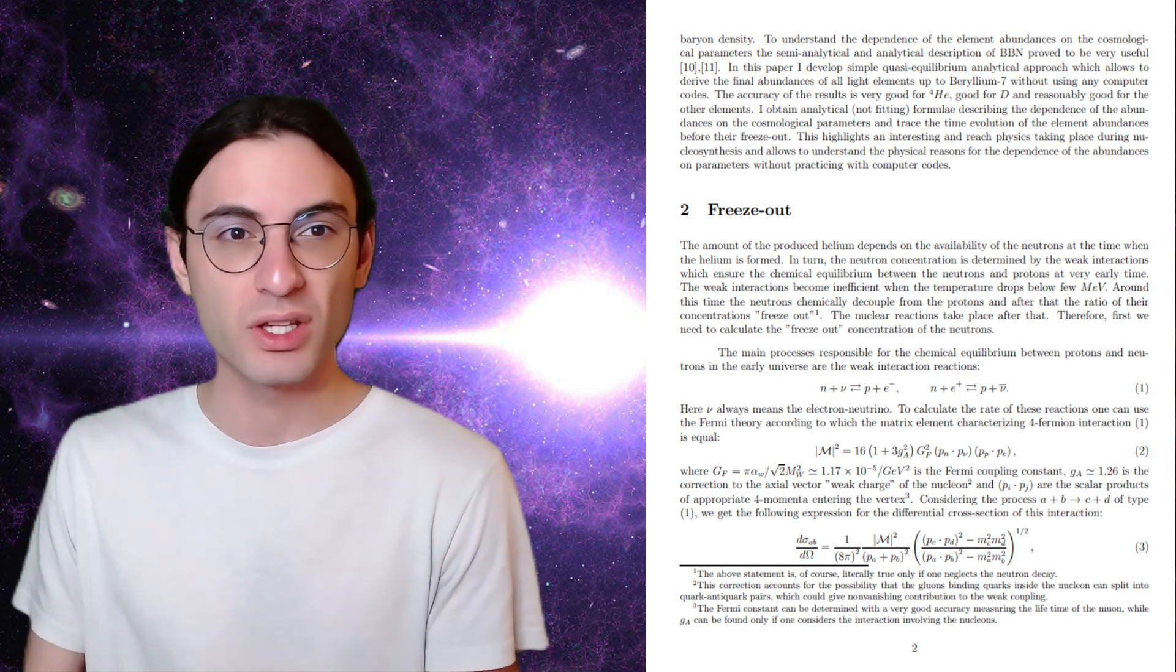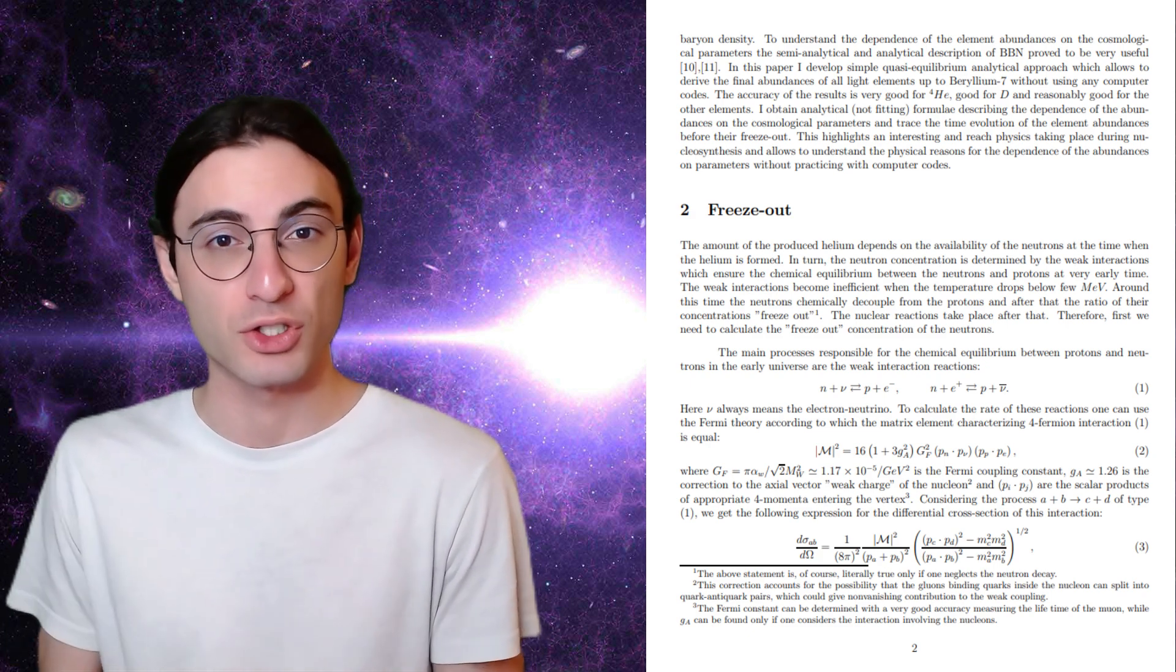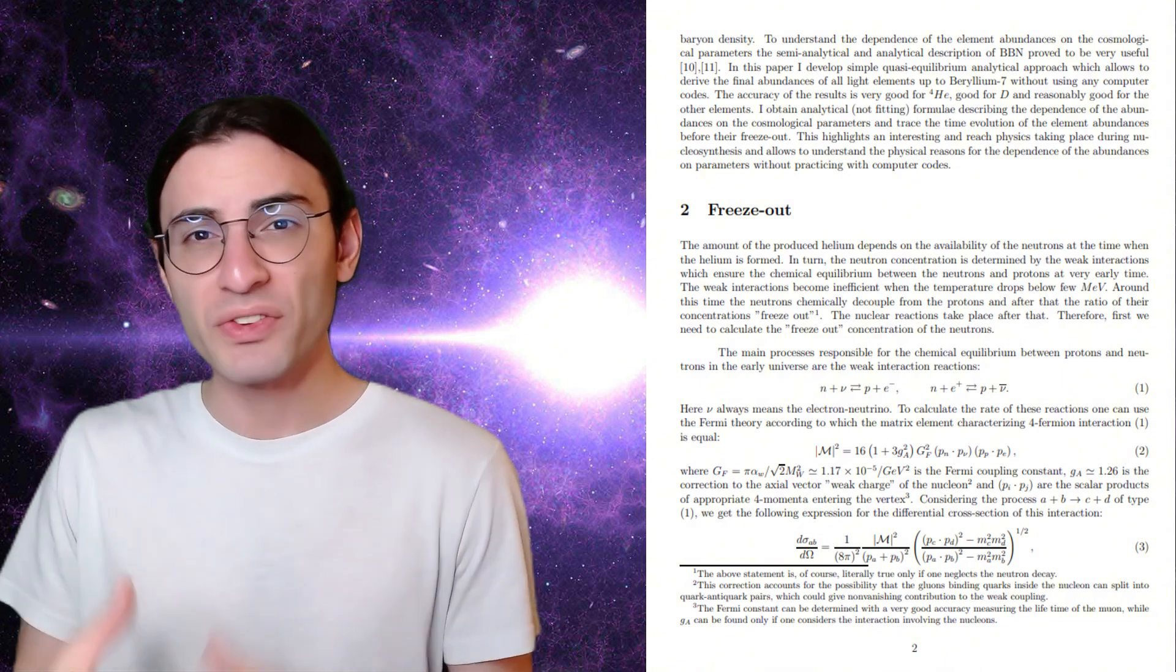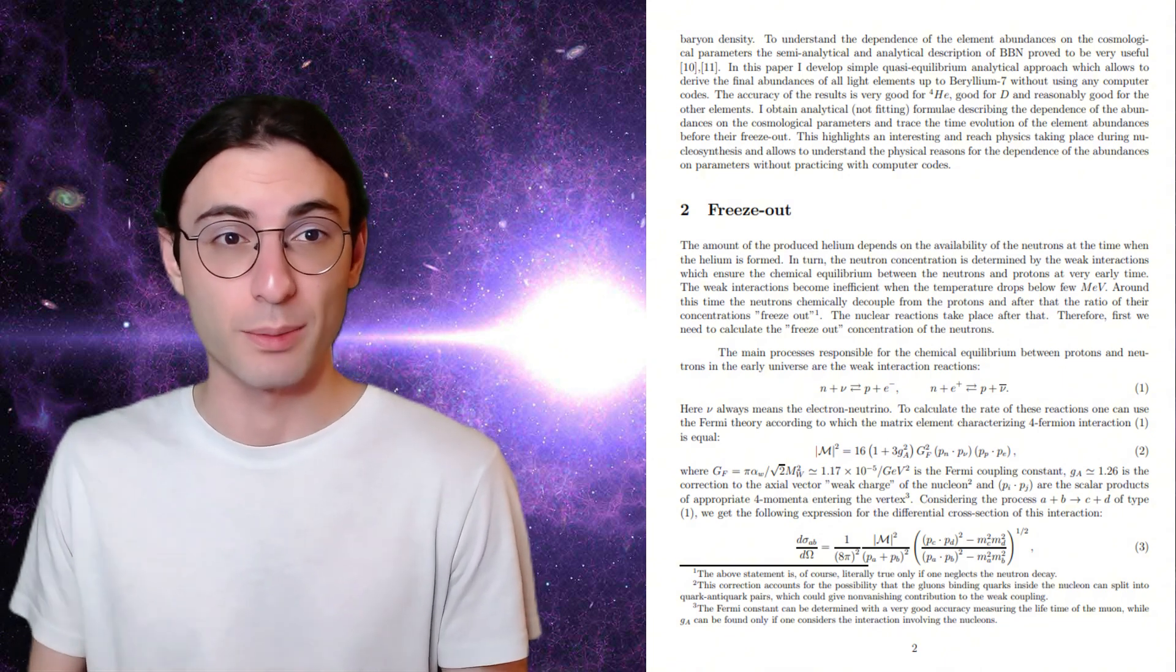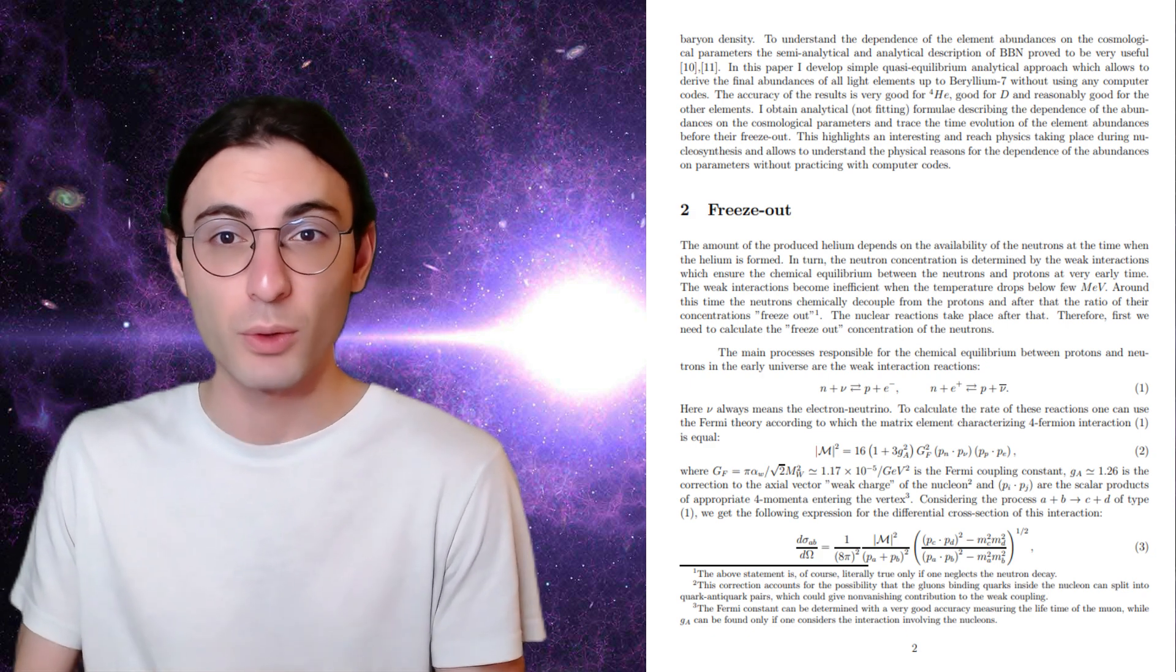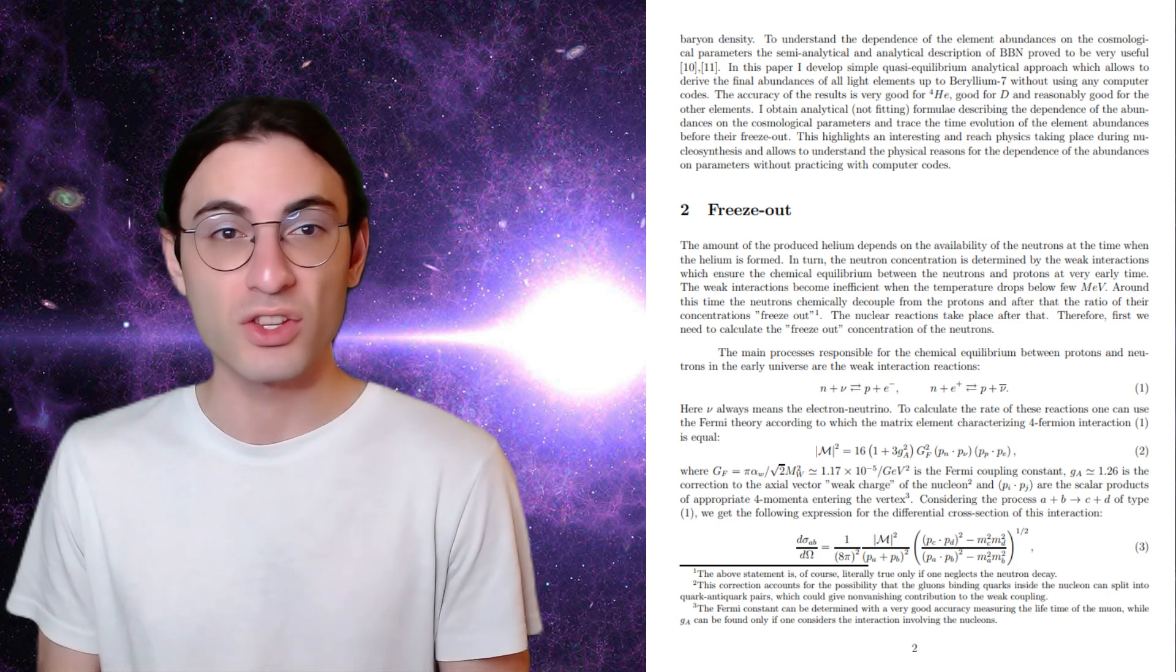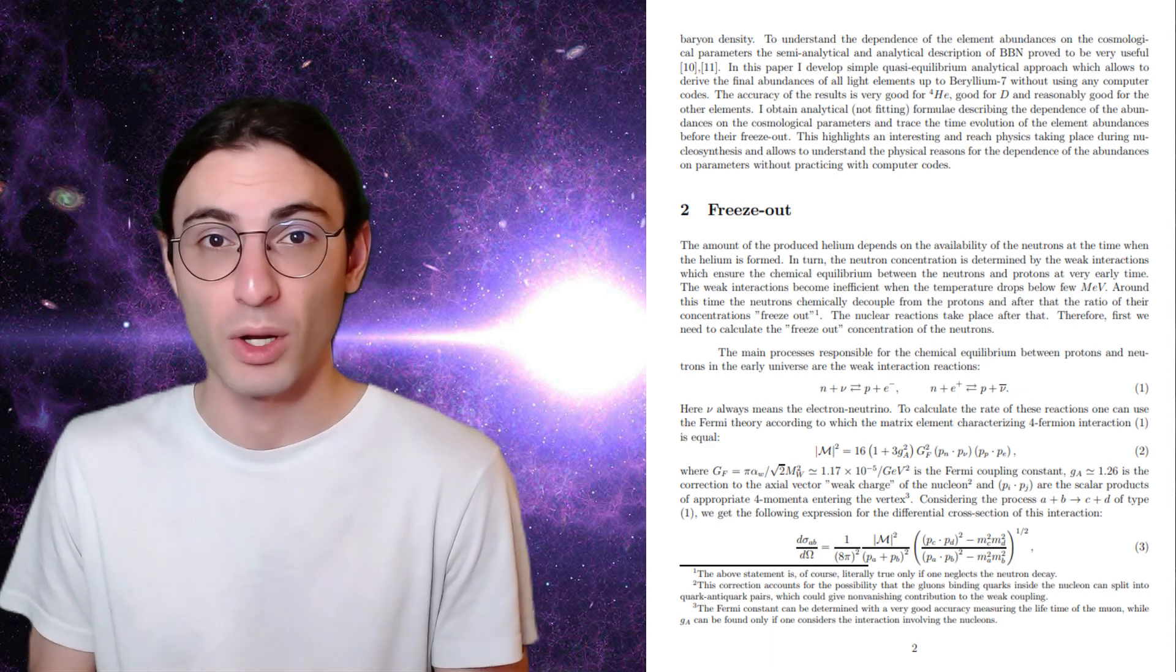Essentially, protons only efficiently turn into neutrons above a certain temperature, and the reverse reaction can happen at a slightly lower temperature. But once the universe cools below that slightly lower temperature, the neutron and proton abundances are frozen out. They don't change anymore. So the longer the universe stays in that in-between temperature range, the lower the neutron abundance at the end of this whole process.